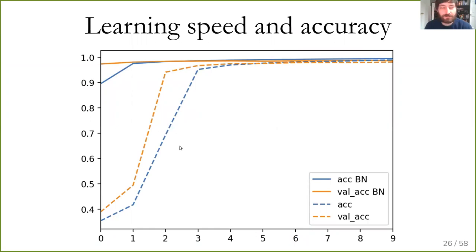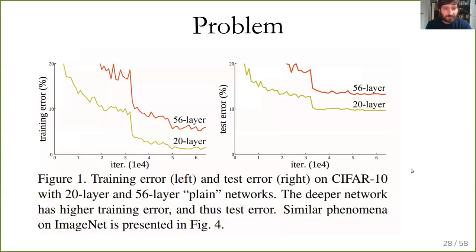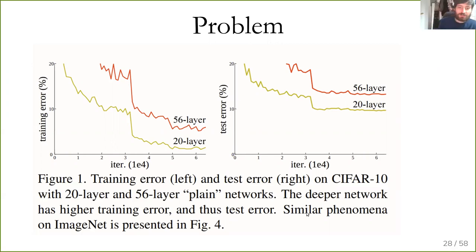Here's a comparison on a small example on MNIST between using batch normalization and not using it. The solid lines are with batch normalization and the dashed lines are without. Learning can go much faster with batch normalization, and this is even more pronounced for larger networks. Unfortunately, batch normalization still doesn't fully solve the very deep network problem. It helps you learn faster and helps you learn deeper networks, but still doesn't allow you to easily go to 56 layers. The next innovation that came after this is what is known as residual neural networks.